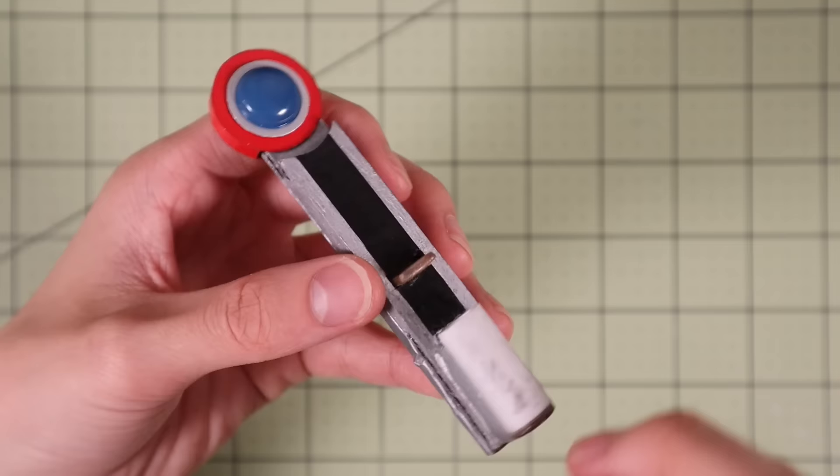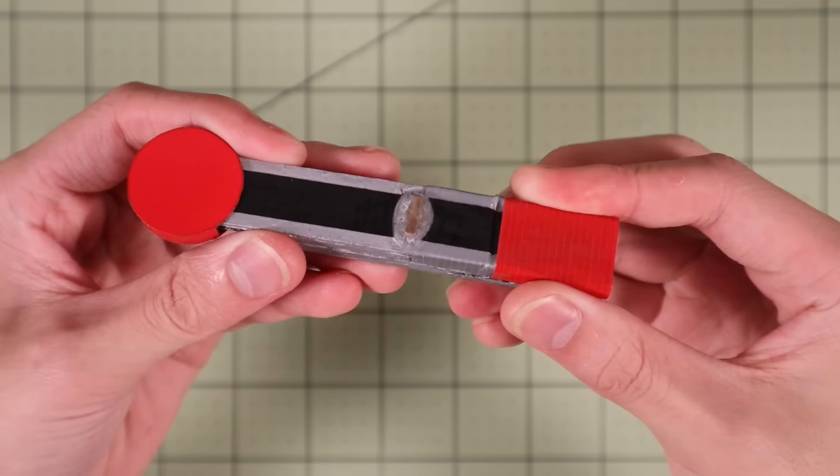This is a pretty nitpicky step, but if you want you can add a small piece of red duct tape here to make it blend in more with the red part of the web shooter.